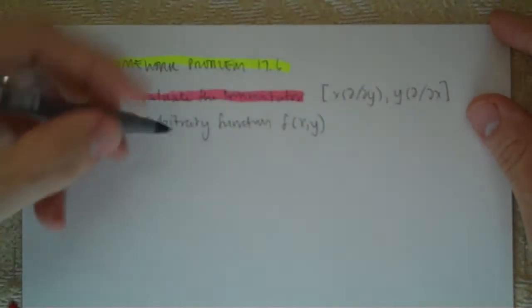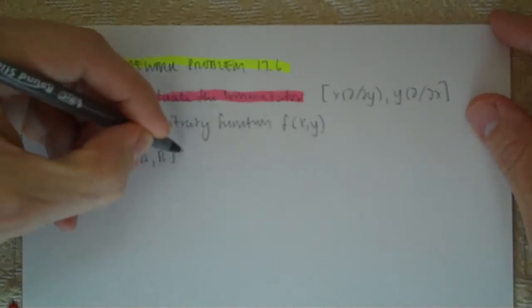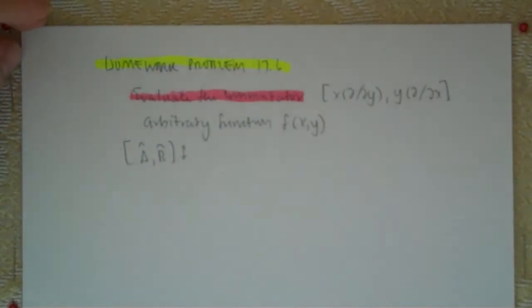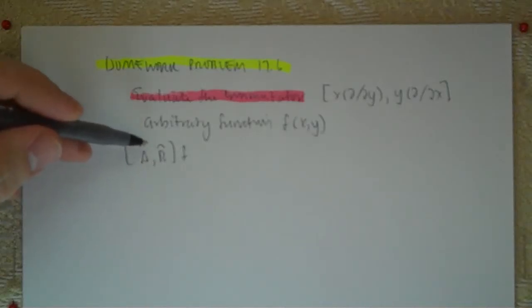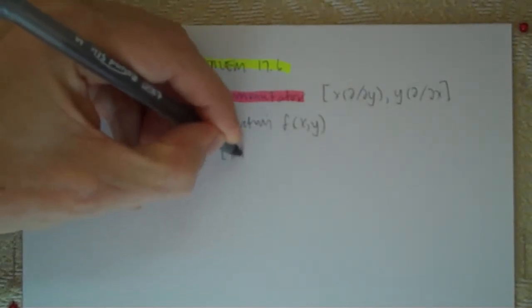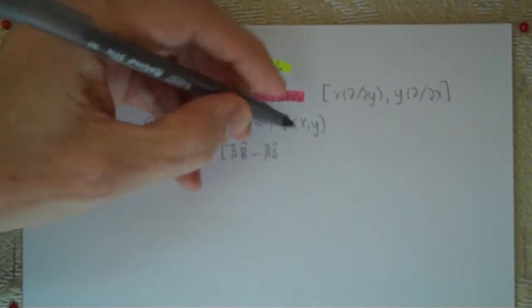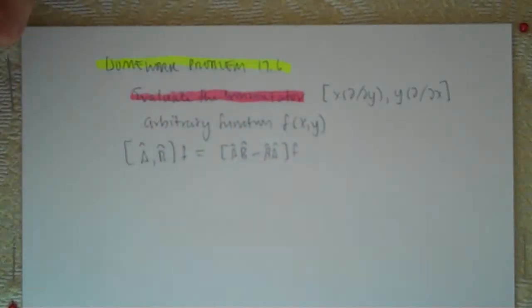Now I've asked you a couple times to consider what are some other ways this question could be asked. So evaluate the commutator and what I typically do is I think to myself, I'm going to map this out so that I don't lose my way. The commutator is defined as A hat, B hat, minus B hat, A hat on an arbitrary function. That's the definition.